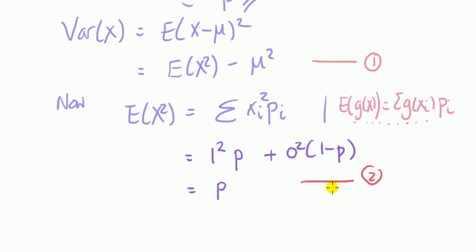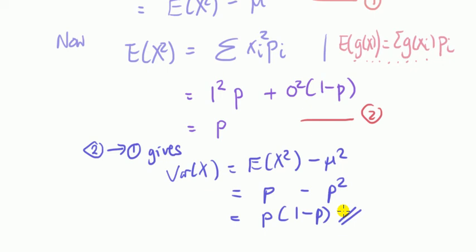We call this result 2. Now to get the variance of X I substitute this into 1. So we can see that the variance of X is equal to the probability of success times probability of failure.